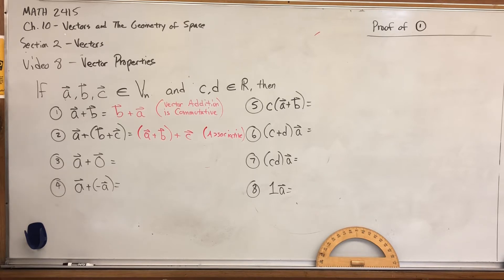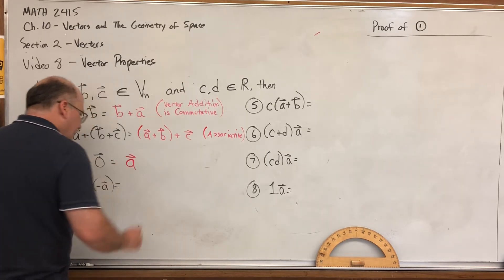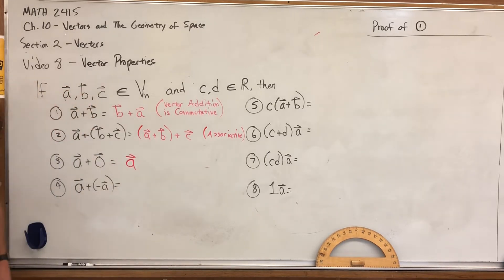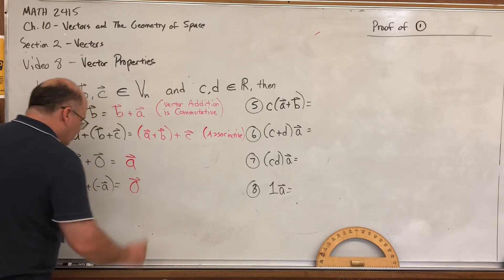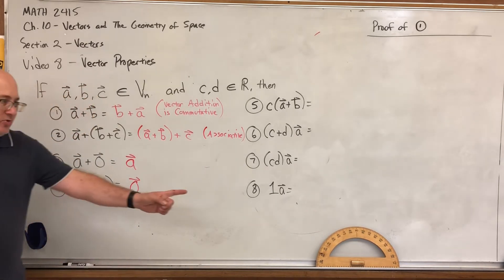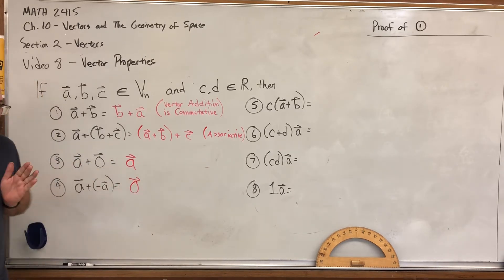The third property says if you take any vector and add the zero vector, guess what you get? Well, the zero vector has no magnitude, so it doesn't change the displacement after you've added the first vector, so it's just A. Well, that's kind of obvious. Anything plus zero is itself. Yeah, I know. Property four says if you take a vector A and add it to its opposite, you get the zero vector. That makes sense. A says go this direction. Negative A says go the opposite direction. So if I do them back to back, my total displacement is zero, the sum is the zero vector.